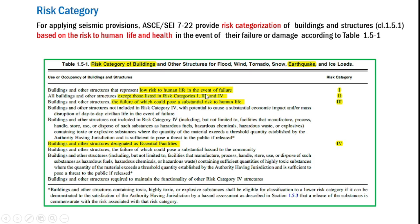Category one involves buildings and structures that represent low risk to human life in the event of failure. Category two includes all buildings and structures except those listed in categories one, three, and four — essentially the remainder. Category three includes buildings and structures whose failure would pose a substantial risk to human life and the public. Category four carries the largest risk and includes buildings and structures designated as essential facilities.